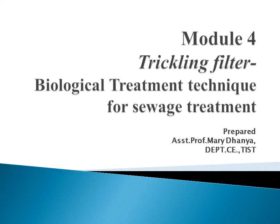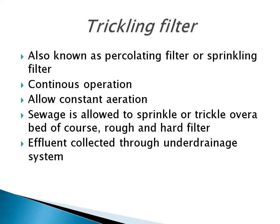Now let us start with the trickling filter. There are different types of filters used for treating sewage: contact filter, indirect enzyme filter. Compared to these two types, the trickling filter has high efficiency and the effluent coming from the trickling filter is of good quality. This trickling filter is also known as percolating filter or sprinkling filter. In trickling filter the operation is continuous, whereas in contact filter and intermittent sand filter the operation is not continuous — it is intermittent.